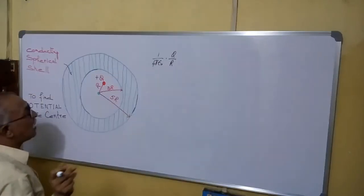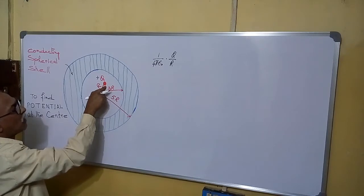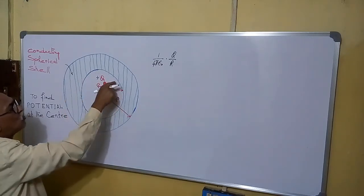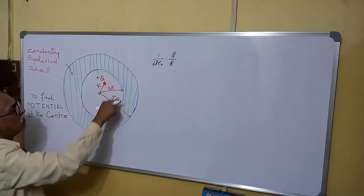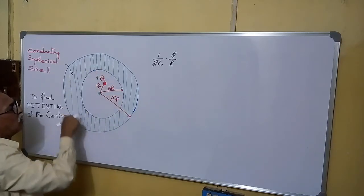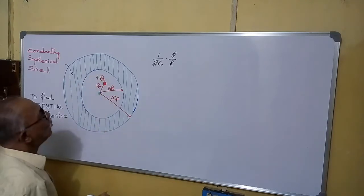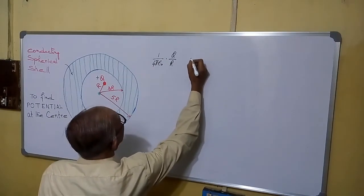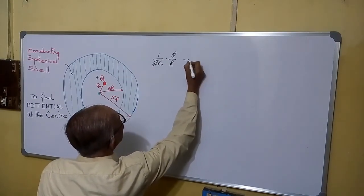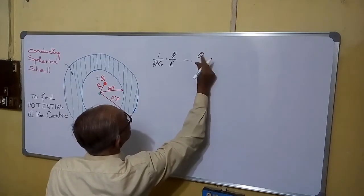Now see carefully in this type of sums. Here is plus Q charge and it is a hollow sphere. So here, there will be induced negative charge on this surface of the sphere and induced negative charge will be minus Q. So for that, potential will be minus Q here.